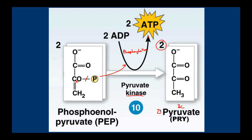So what did we produce? We produced two three-carbon pyruvates, two NADHs, and a net of two ATPs. We spent two at the beginning and produced four, netting two ATPs at the end of glycolysis. The fate of these pyruvates is to keep going down the pathway. The question will be whether oxygen is present or absent, which will determine the pathway we take next.